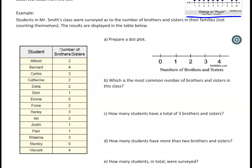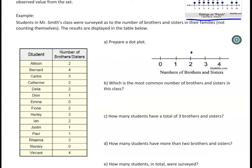In this case, the number of brothers and sisters. So this first person has two, so we just simply put a dot over the two. Bernard has four, and we just keep going down the list. Catherine's got two.